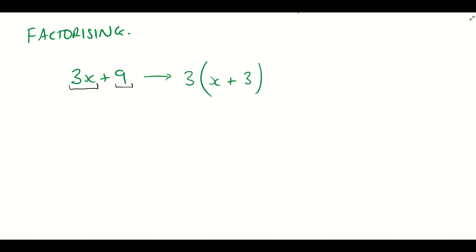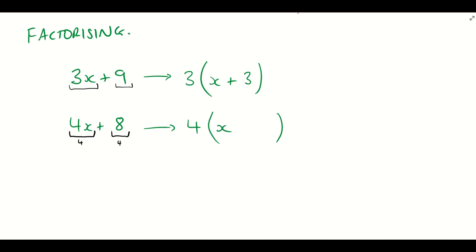Let's do another one. Let's do 4x plus 8. We're looking for a factor common amongst both 4x and 8. The number 2 could go in, yes, but a bigger number — the number 4 — could go in. So we want to look for that highest common factor. Using 4, this turns into 4 on the outside, and inside: how many times does 4 go into 4x? The answer is x times. Plus, how many times does 4 go into 8? It goes in twice. So the answer is 4(x + 2).